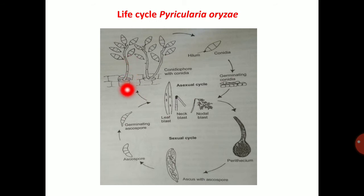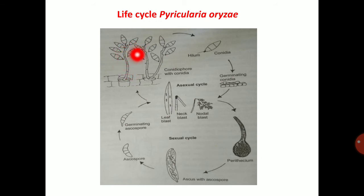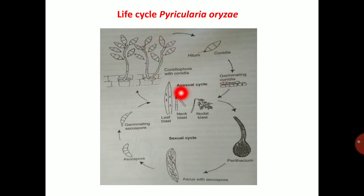Conidia emerge either by breaking through the epidermis or through stomata. These are geniculate conidia, with the tip slightly bent. The conidia are produced with a hilum. This completes the asexual cycle.